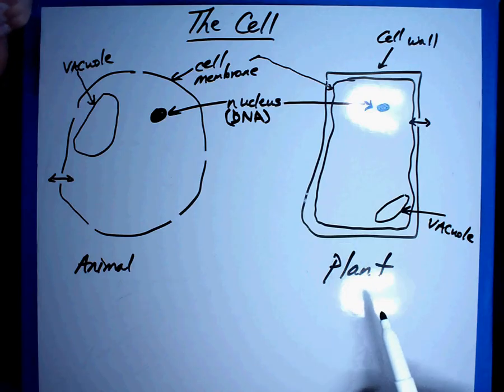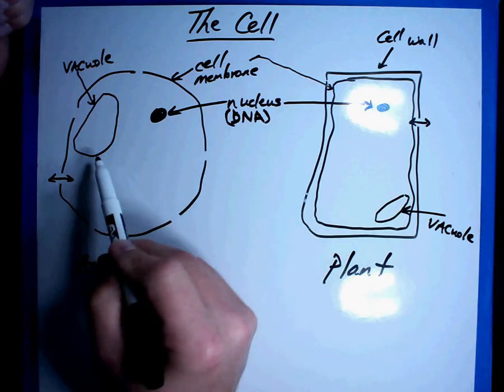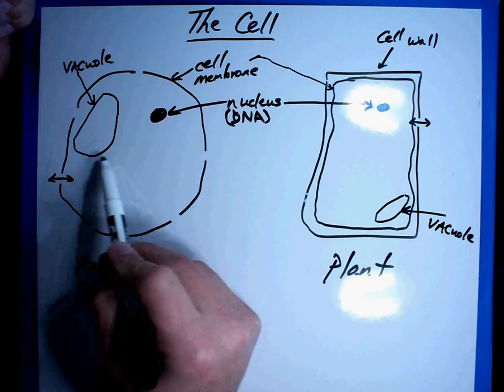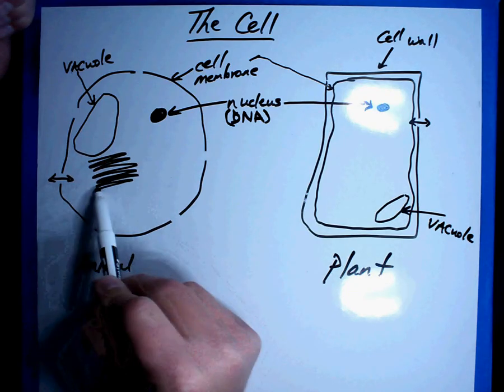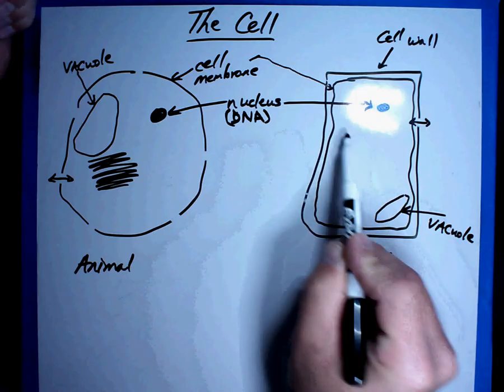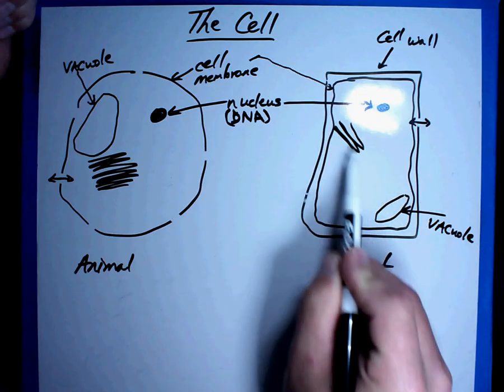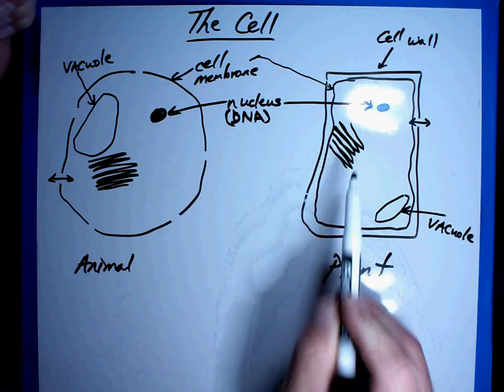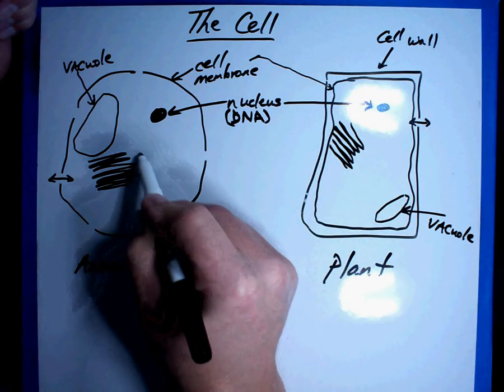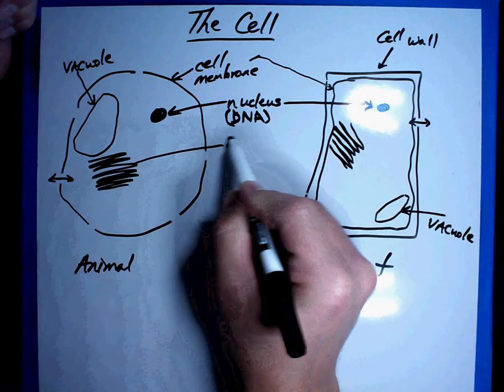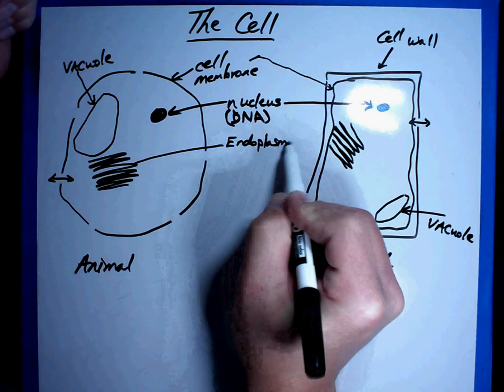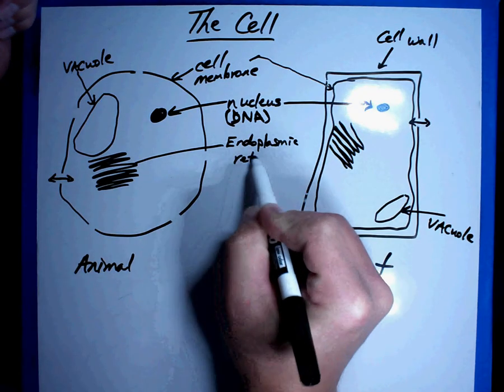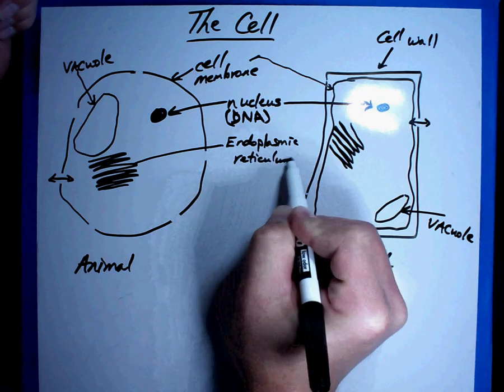So vacuoles are one part. Here's another part. This one is an interesting one. This one is called the endoplasmic reticulum. And I'm going to draw it sort of like this. And that endoplasmic reticulum can be located here as well. Now I'm not the best artist in the world, but here's what it is. Here's how it's spelled. Endoplasmic reticulum.